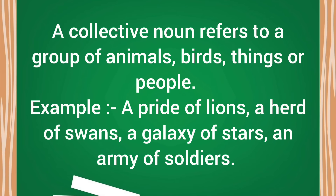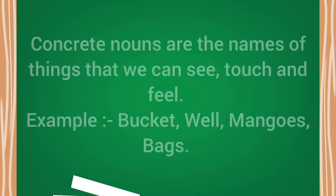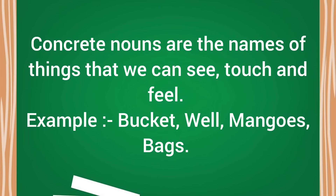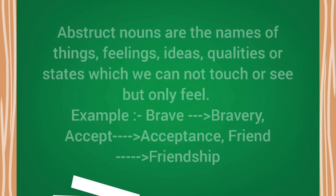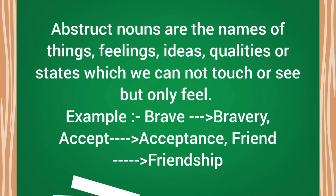Now it's time for the concrete nouns. Concrete nouns are the names of things that we can see, touch and feel — like bucket, well, mangoes, bags. These things we can see, we can touch and we can feel. But few names are also there which we cannot touch or see but only feel — they are known as abstract nouns, like brave to bravery, accept to acceptance, friend to friendship. All these feelings, ideas, qualities or states are known as the abstract noun. We can form abstract nouns from verbs, adjectives and common nouns.